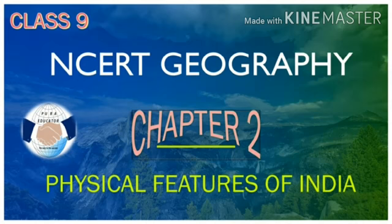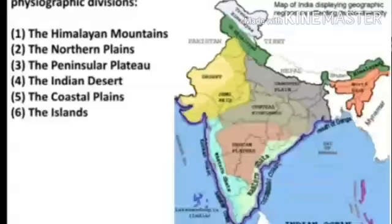In Physical Features of India, we were going through the different physiographic divisions. First of all, we have taken the Himalayan Mountains. These mountains form a range — a parallel range.